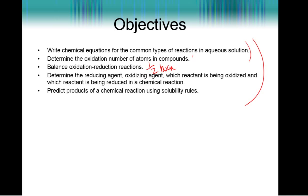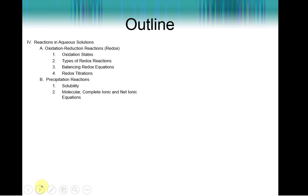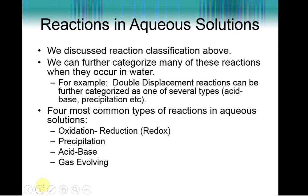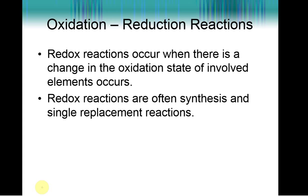We're going to get into solubility and use solubility rules to predict the products in a precipitation reaction. For reactions in aqueous solutions, we're going to look at a more detailed categorization. Double displacement reactions could be acid-base reactions, they could be precipitation. We could deal with oxidation-reduction reactions. Redox reactions can be of several types too. So we really want to get very detailed about not only what type of reaction it is overall, but what is happening to those compounds. Redox reactions occur when you have a change in the oxidation state of the elements.